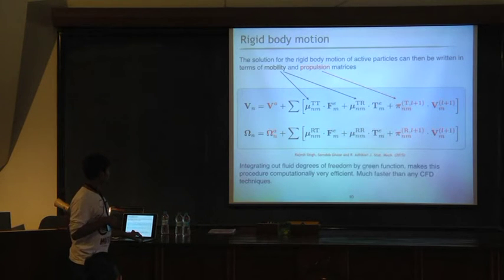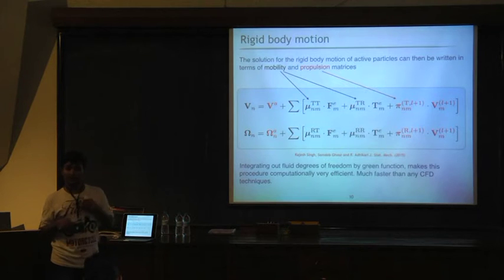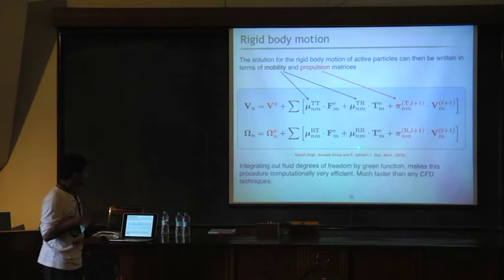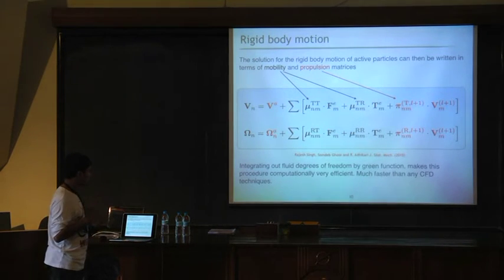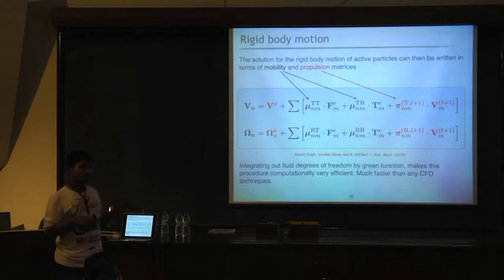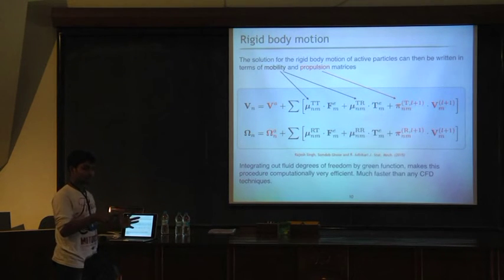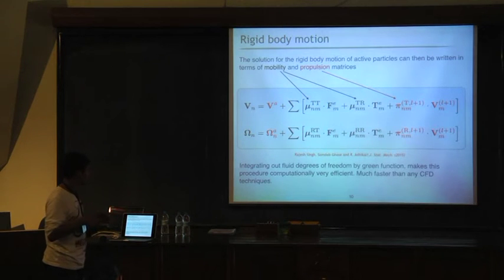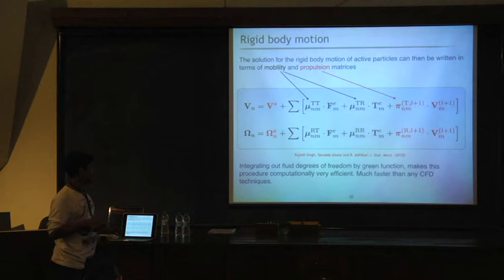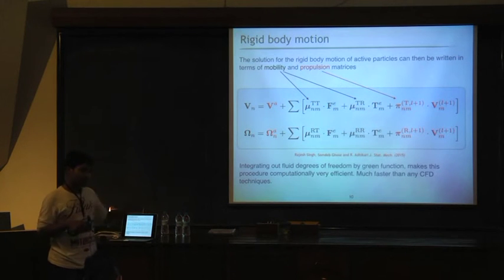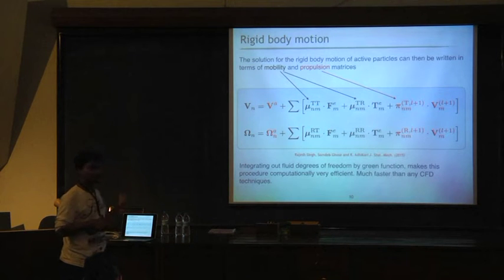Now similarly, you can ask the question, and the interesting thing is how it is different from what Snigdha is doing. Now the moment you will take care of Green's function way, you can take care of fluid degrees of motion. So from 3N number of particles, you can go to 2D surfaces and the integration will be computationally very efficient and much faster than any CFD techniques you will come across, because you have to integrate out all the full fluid degrees of motion in one case, but not in our case.